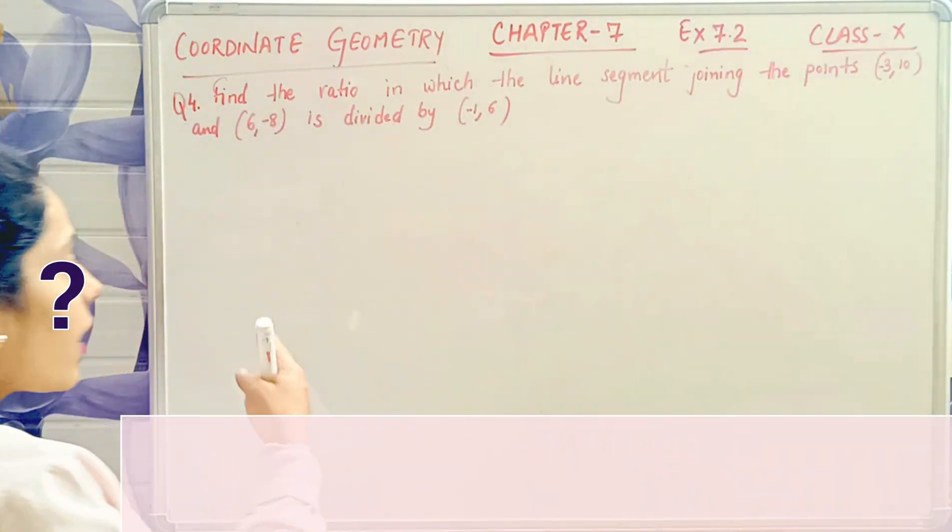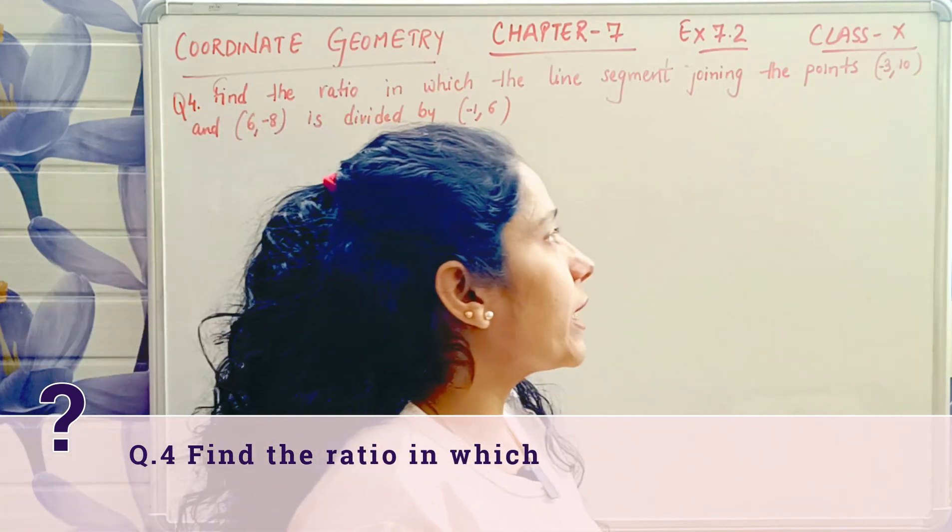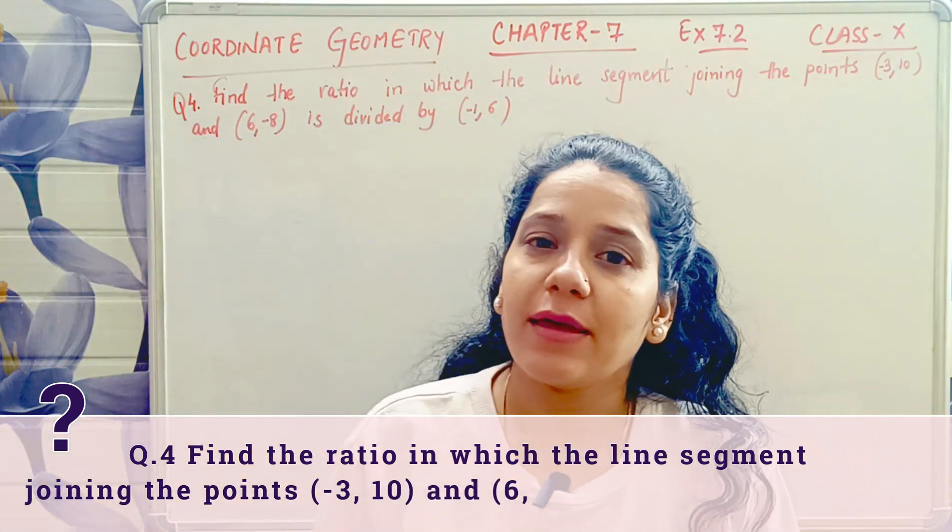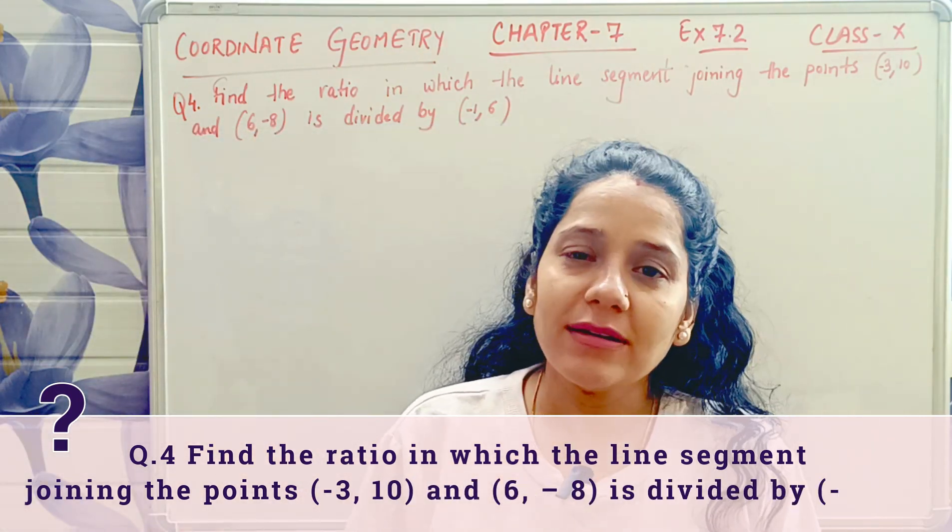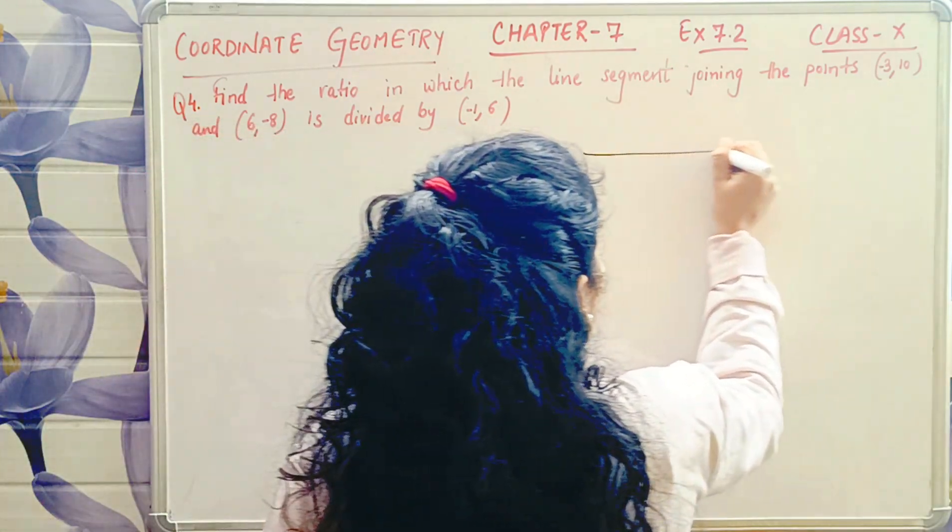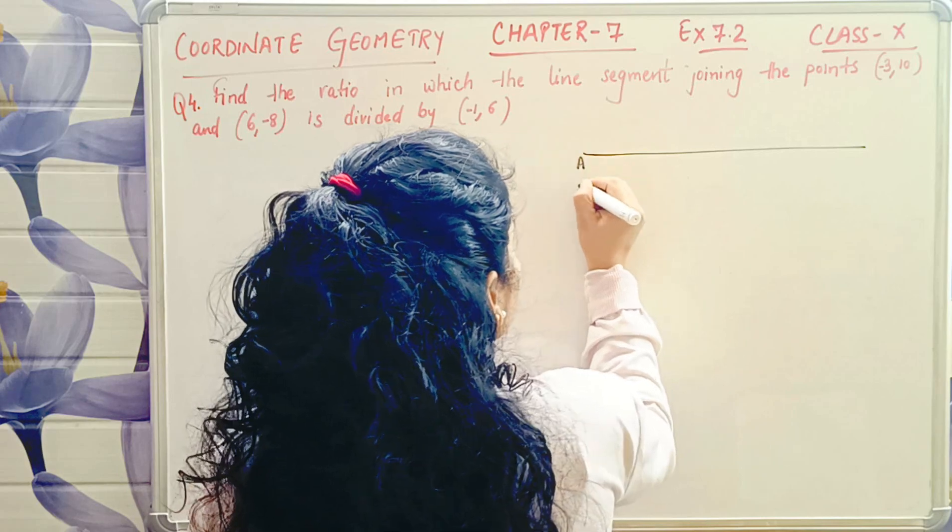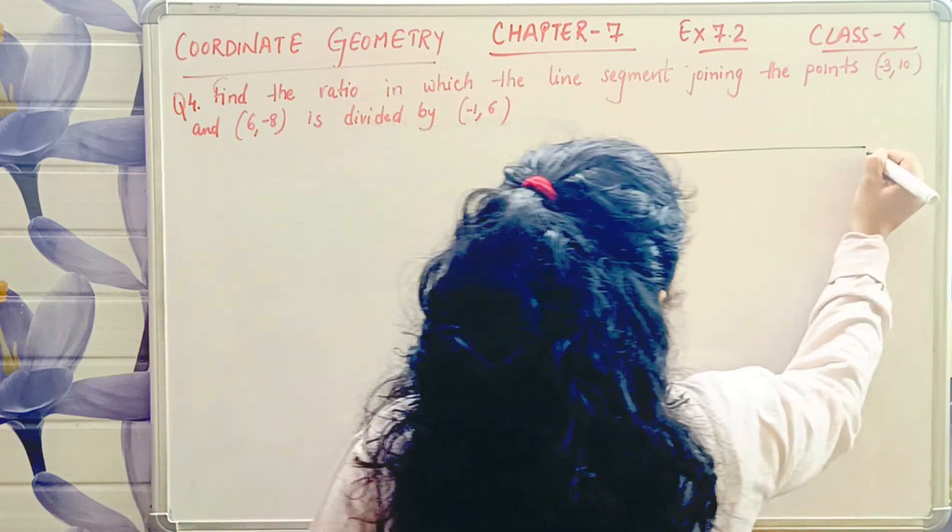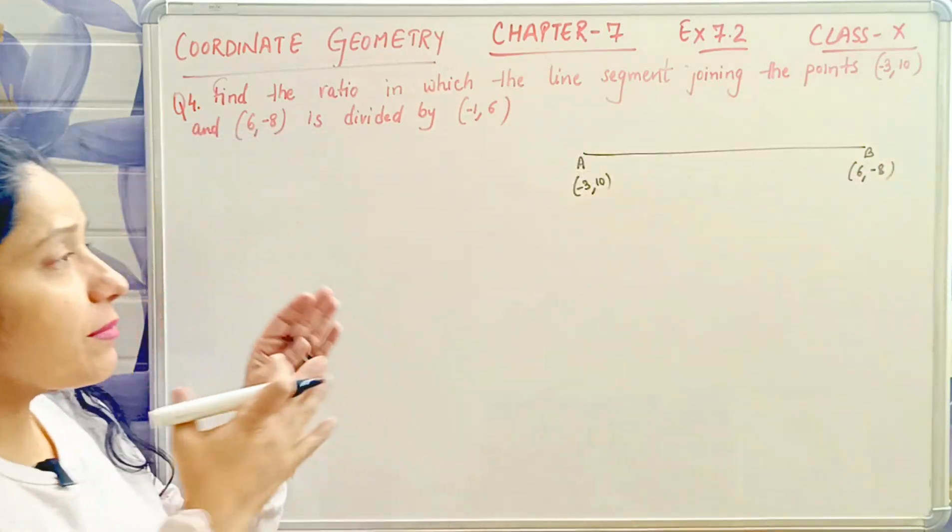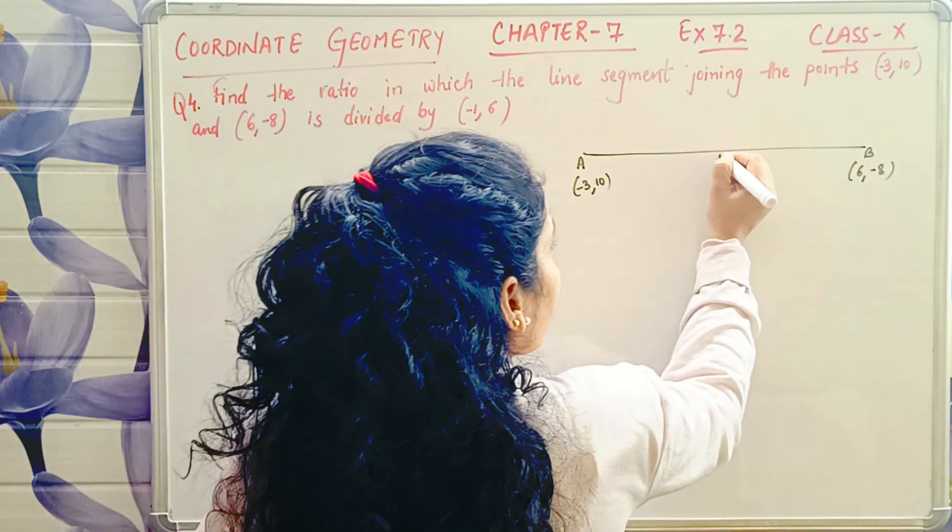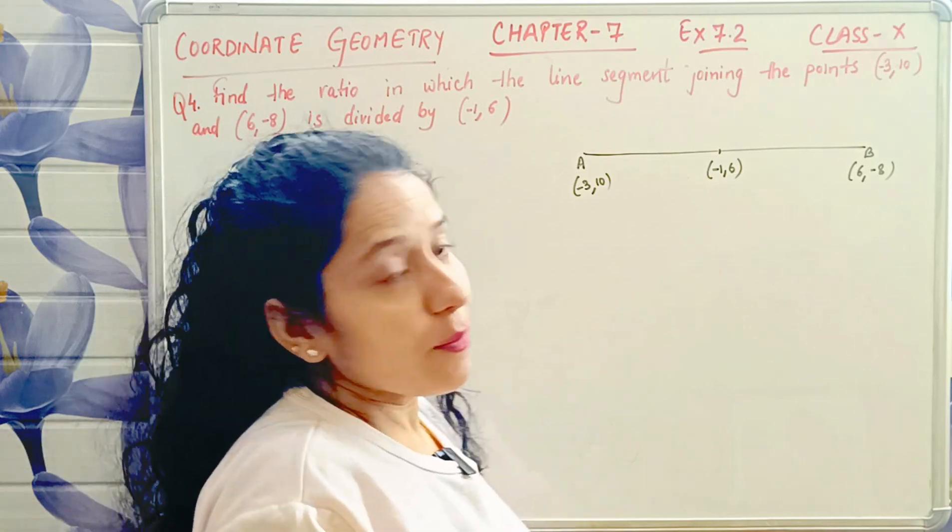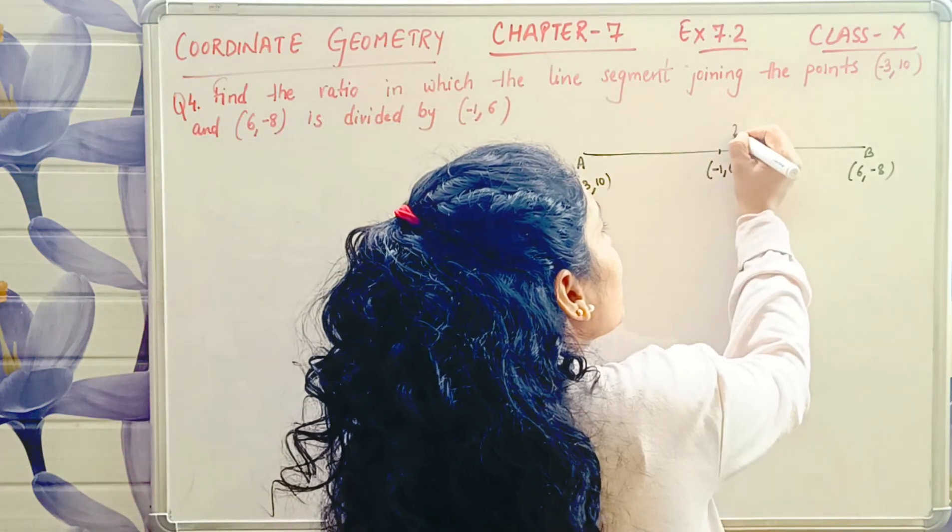Question number 4 is: Find the ratio in which the line segment joining the points (-3, 10) and (6, -8) is divided by (-1, 6). So look at this question, you have to find the ratio in which the line segment is divided by (-1, 6). You are to find this ratio here.